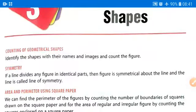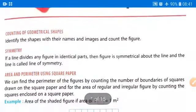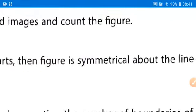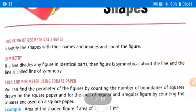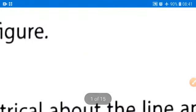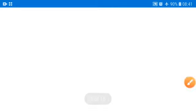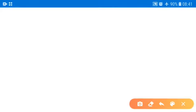In this chapter, first of all we will learn about counting — counting of geometrical shapes, how to count the number of triangles, squares, rectangles, and so on. The second thing we are learning is symmetry. If a line divides any figure into identical parts, it is called the line of symmetry.